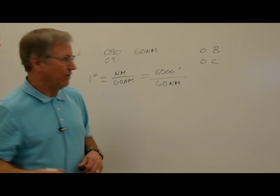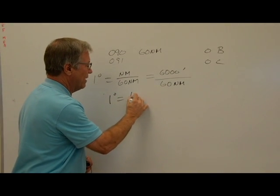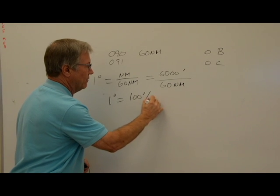If we reduce this down, we come up with one degree equals 100 feet per nautical mile.